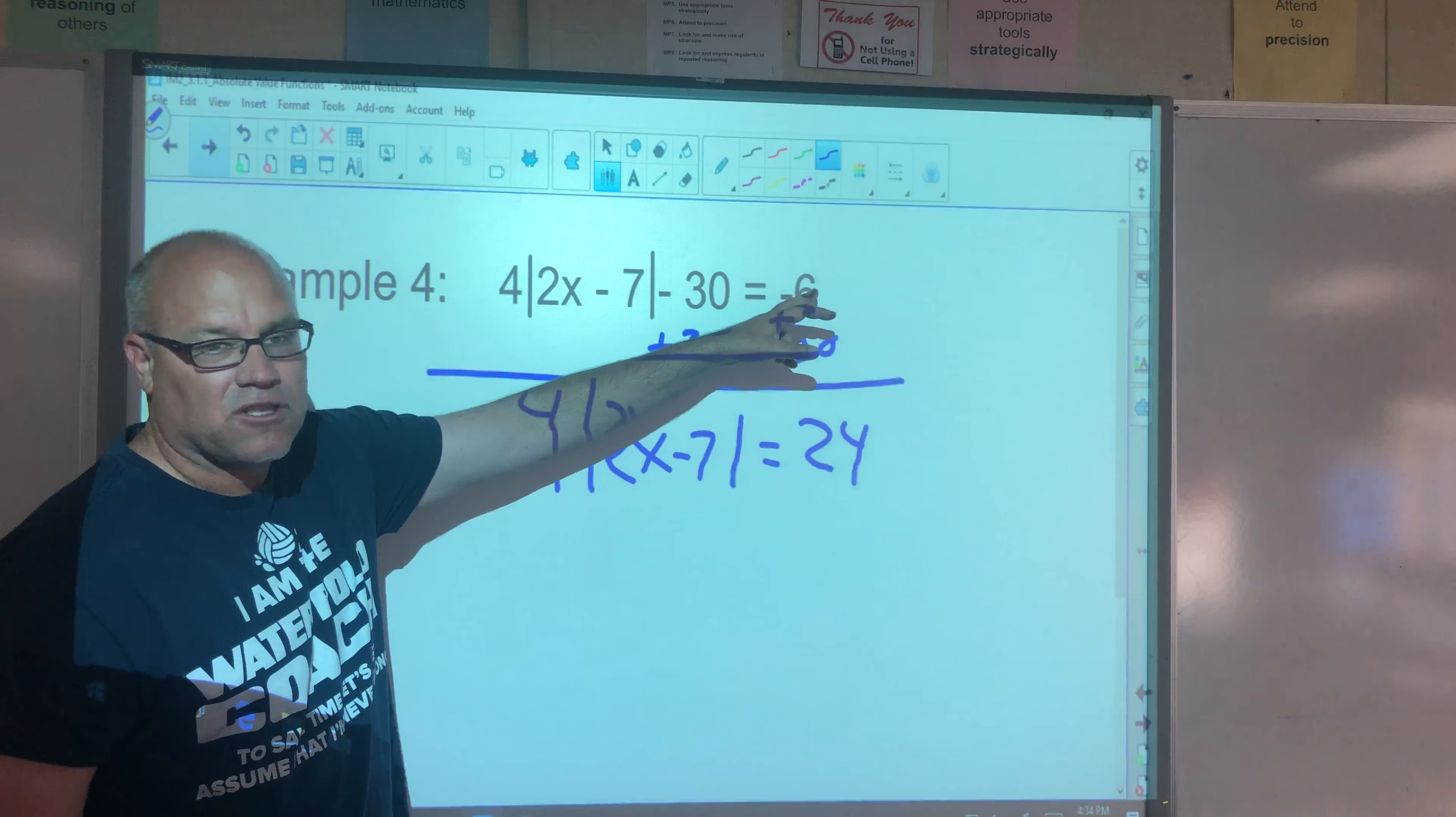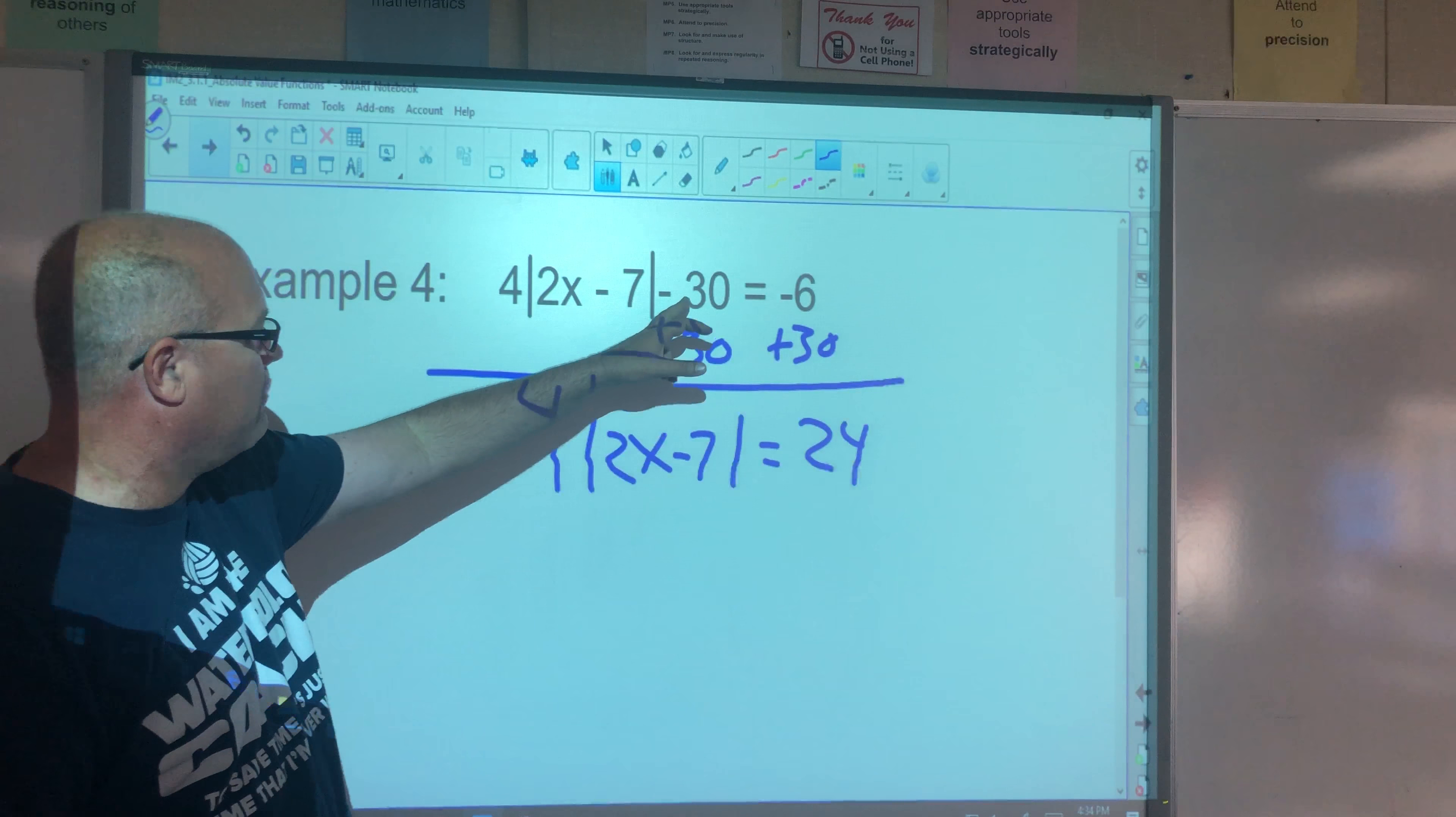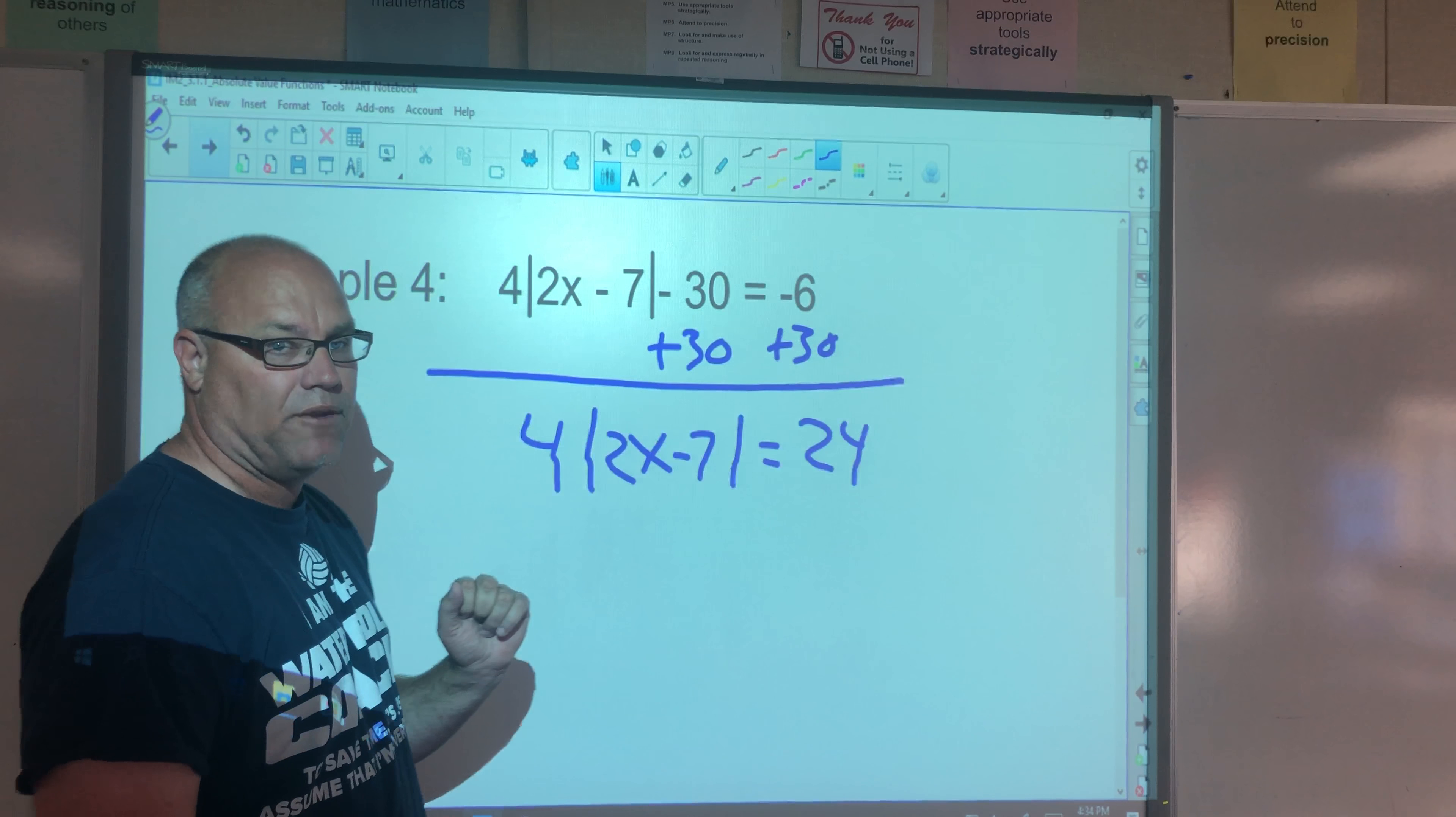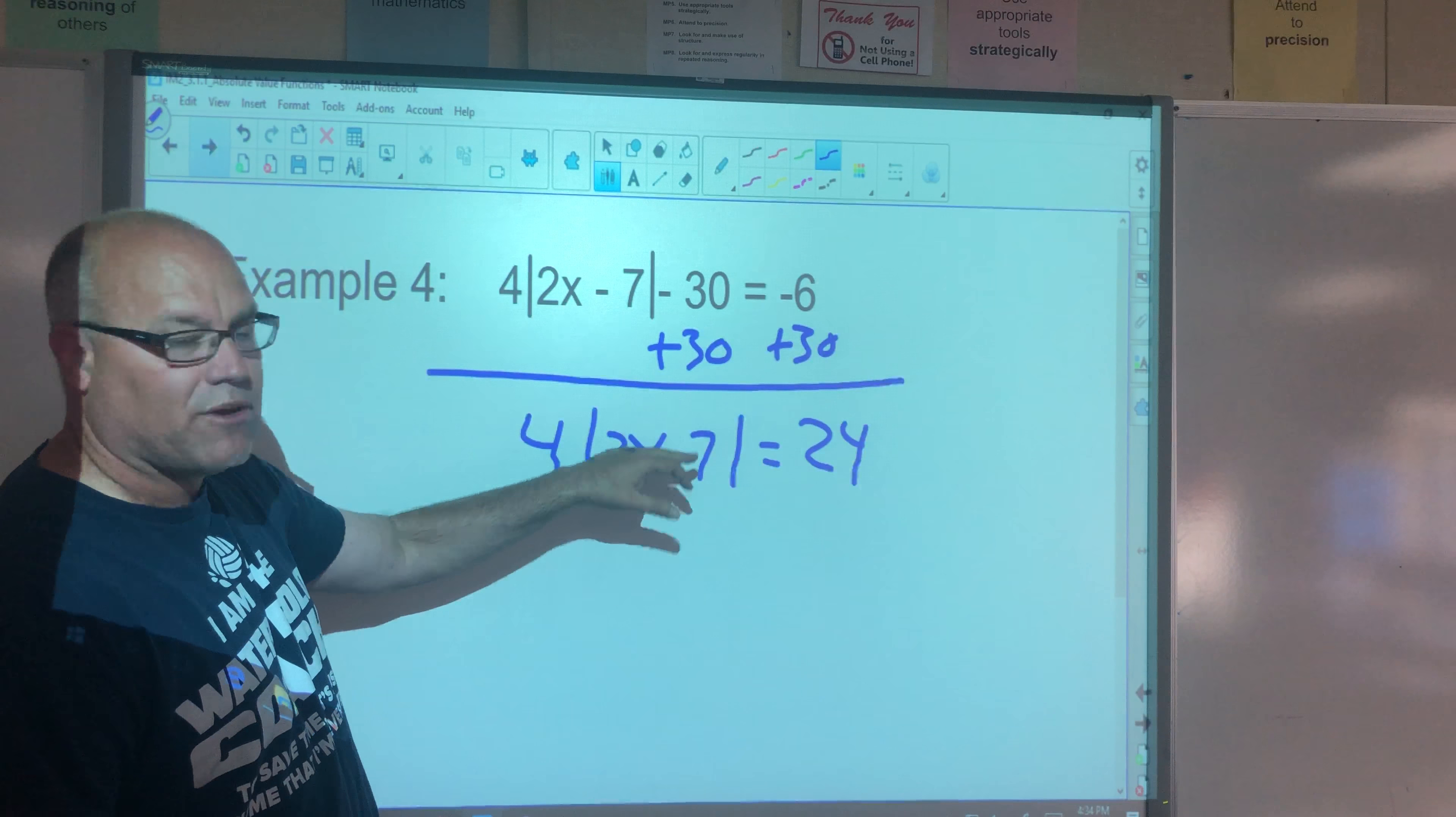Please note, if you first looked at this, you saw the negative six, you were thinking, oh, we can't do this one. Not so fast, right? We add 30 to both sides. As we're starting to isolate this, we see it does equal positive number. We're going to be able to solve this one. Now this means four times the absolute value of 2x minus 7.